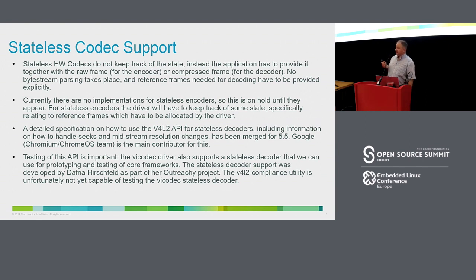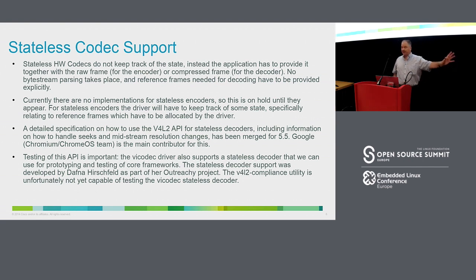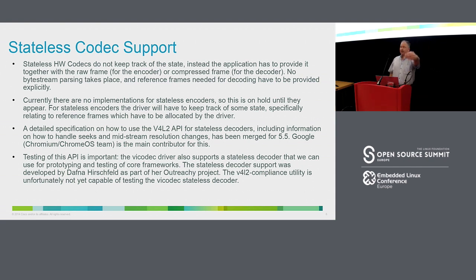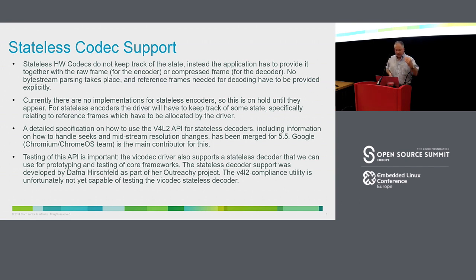The other class of codecs — and that's the main topic — are stateless codecs. Basically these are hardware designs that just do the uncompressing part, and everything else — all the parsing and getting the metadata — is farmed out to user space. These have been around for several years. The API requires being able to send both the compressed frame plus all the metadata to the hardware. This required a new API, which I'll come to in the next slide.